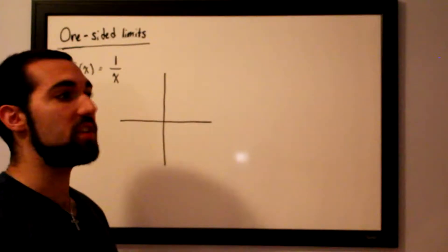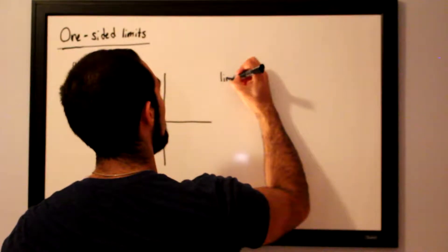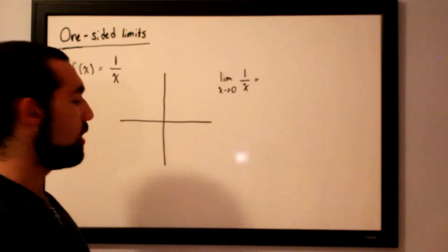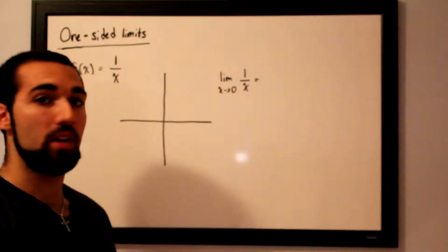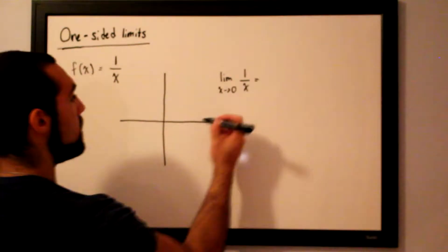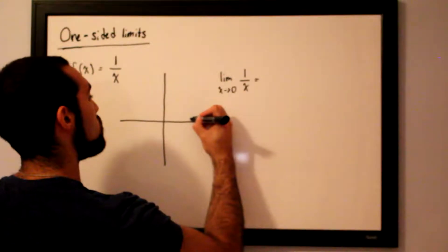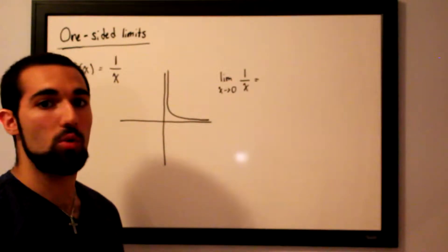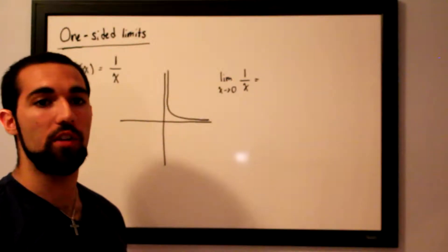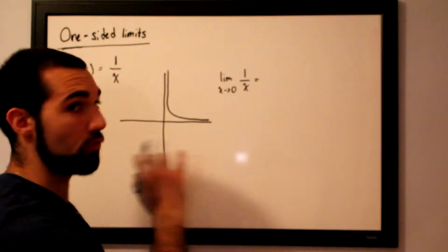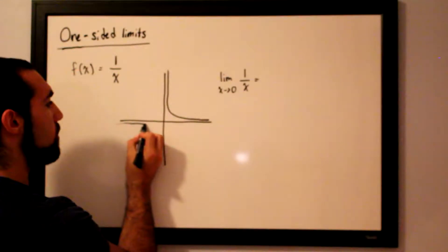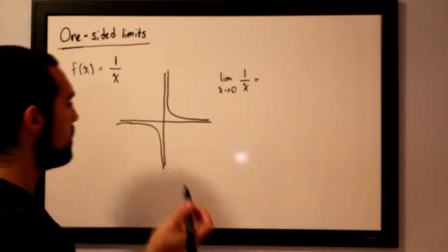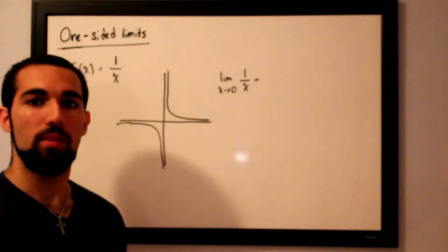If we wanted to evaluate the limit as x approaches 0 for 1 over x — well, if we tried to evaluate this limit from the right, coming in from the right of 0, and drawing this function, it would look something like this, but it would never actually touch 0. Touching 0 is not allowed because 1 over x would make the function undefined. However, if we tried evaluating this function from the left, it would look something like this, dropping downward. So in this case, we have a left-handed and a right-handed limit that just don't agree with each other.